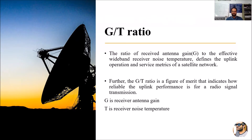How much antenna gain has been produced at the time of receiving by the antenna, and how much noise temperature has been received — based on that ratio, during satellite communication, we measure this particular G/T ratio. G/T ratio is a figure of merit that indicates how reliable the uplink performance is for a radio signal transmission. Based on this ratio, we estimate how reliable and trustworthy a particular antenna is for a radio signal transmission.